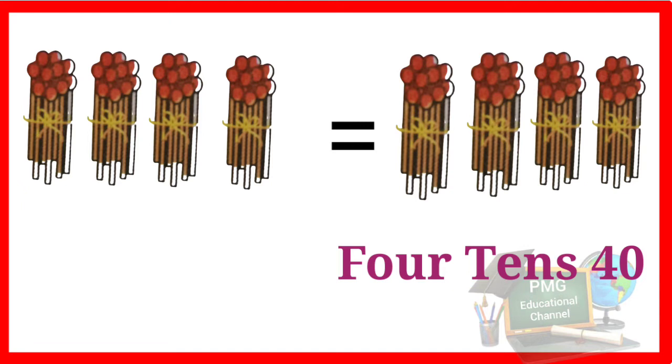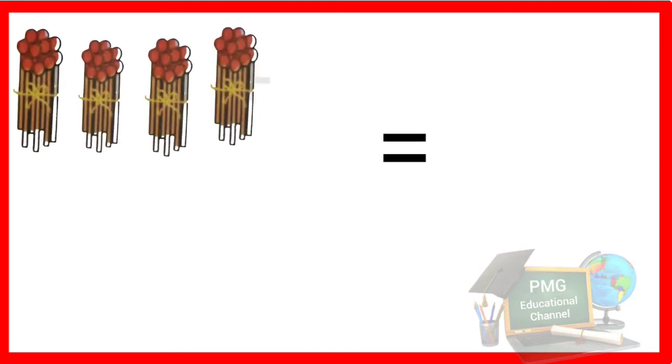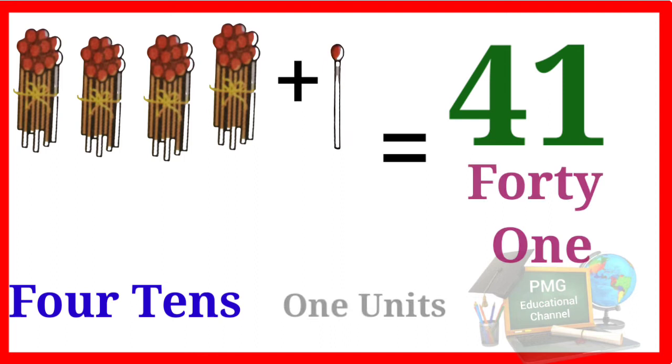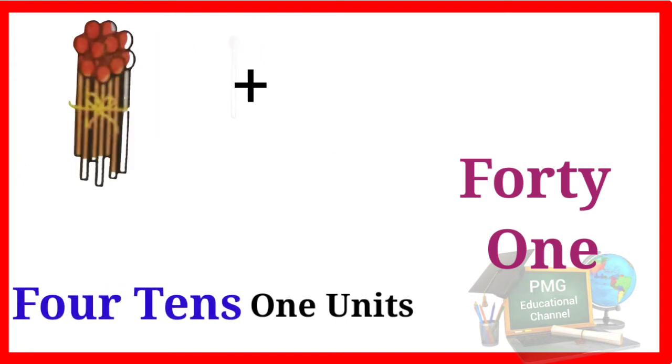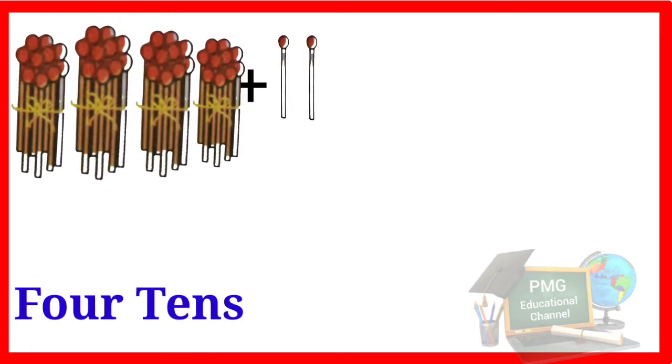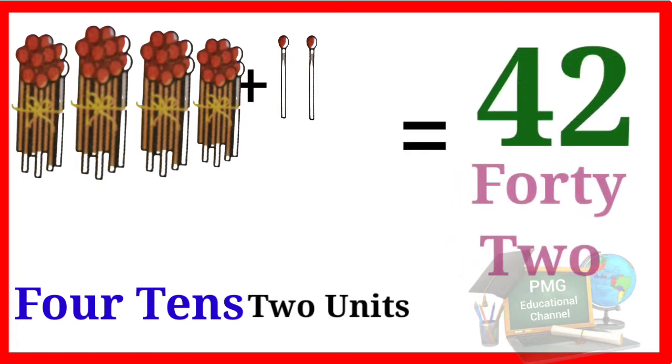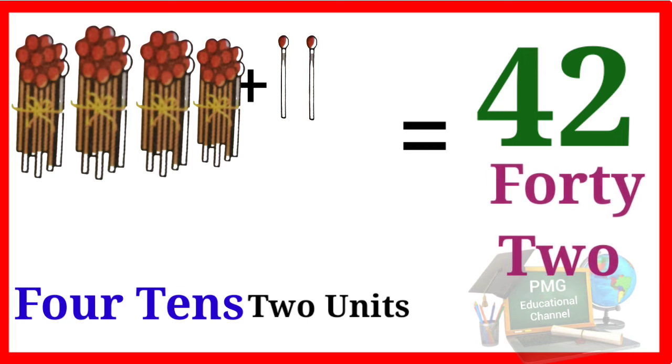Now we will learn numbers 41 to 50. Look at this, here is four tens one unit, 41: F-O-R-T-Y O-N-E, 41. Here is four tens two units, 42: F-O-R-T-Y T-W-O, 42.